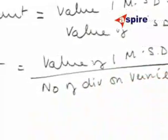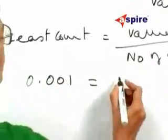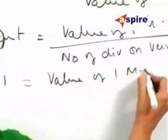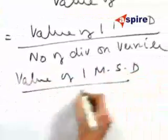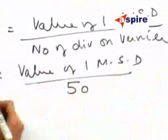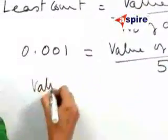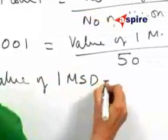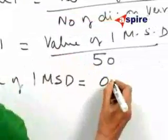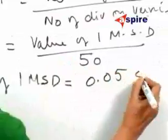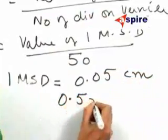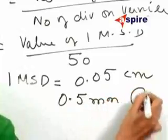Let us substitute: 0.001 equals value of 1 main scale division divided by 50. Therefore, value of 1 MSD equals 0.05 centimeters or 0.5 millimeters. Answer 1.